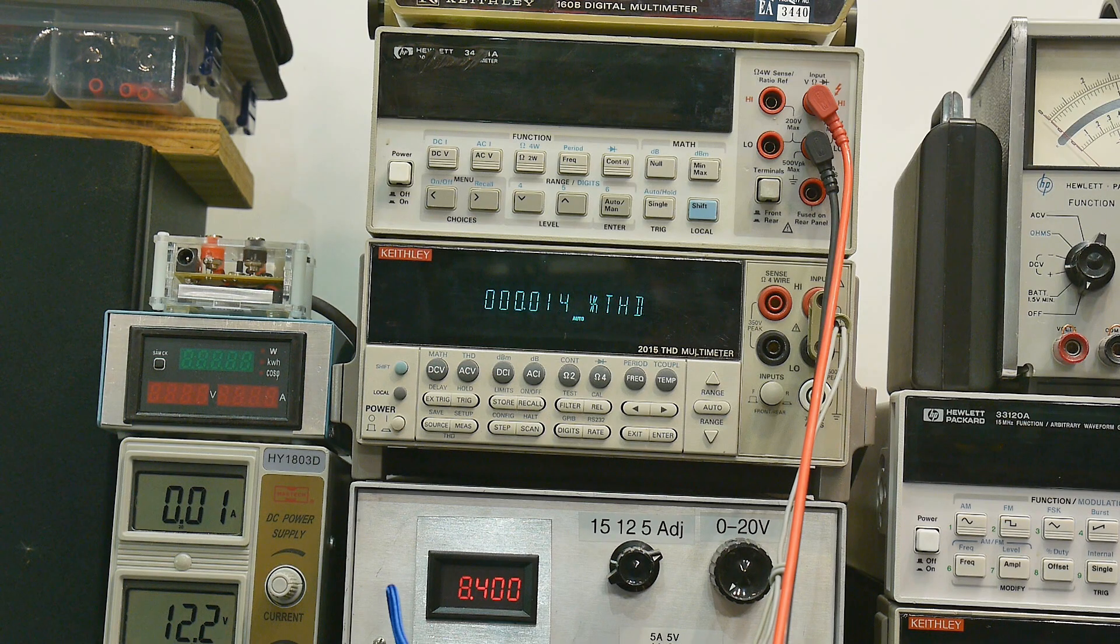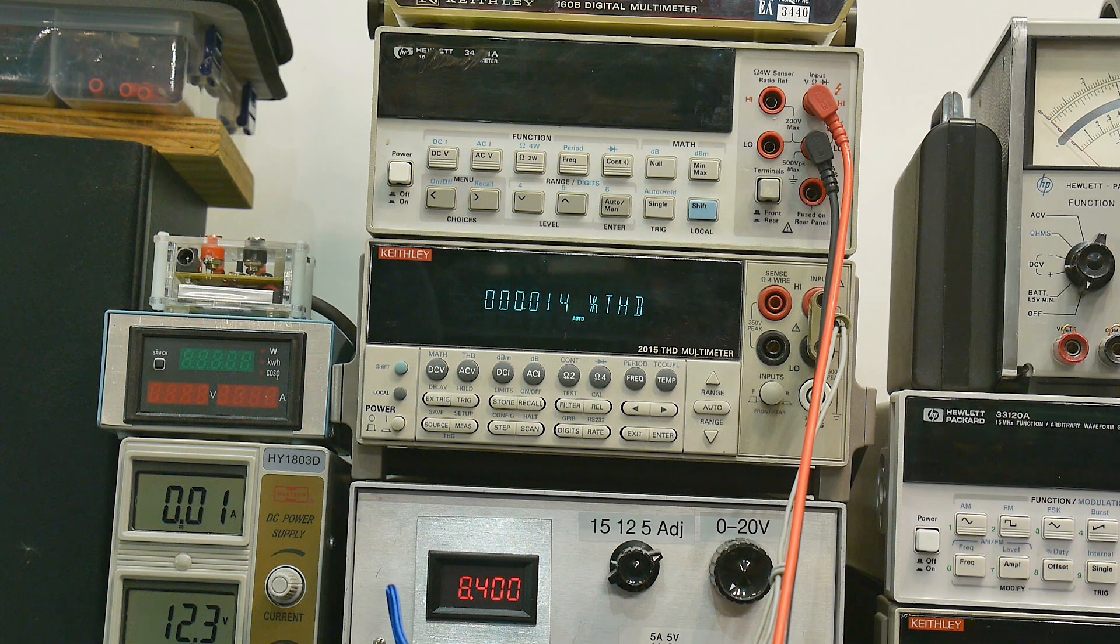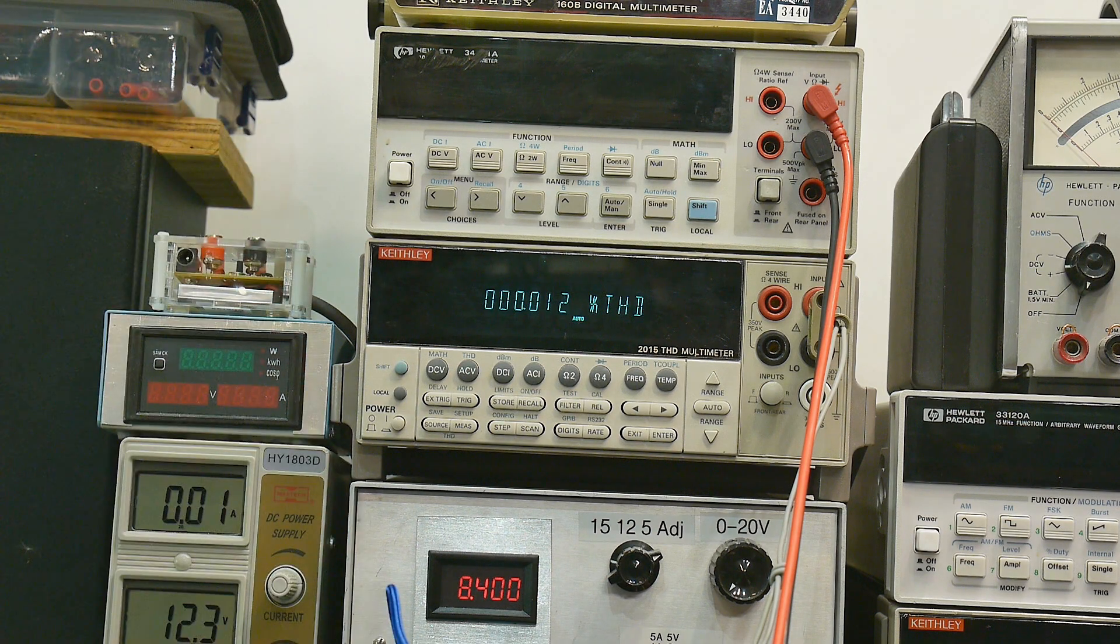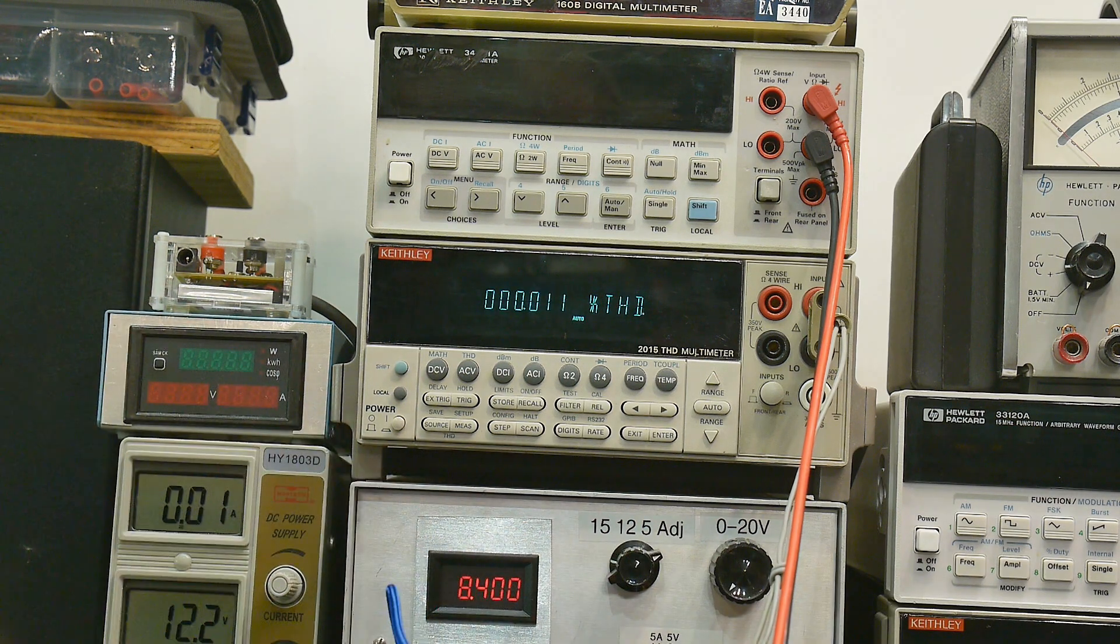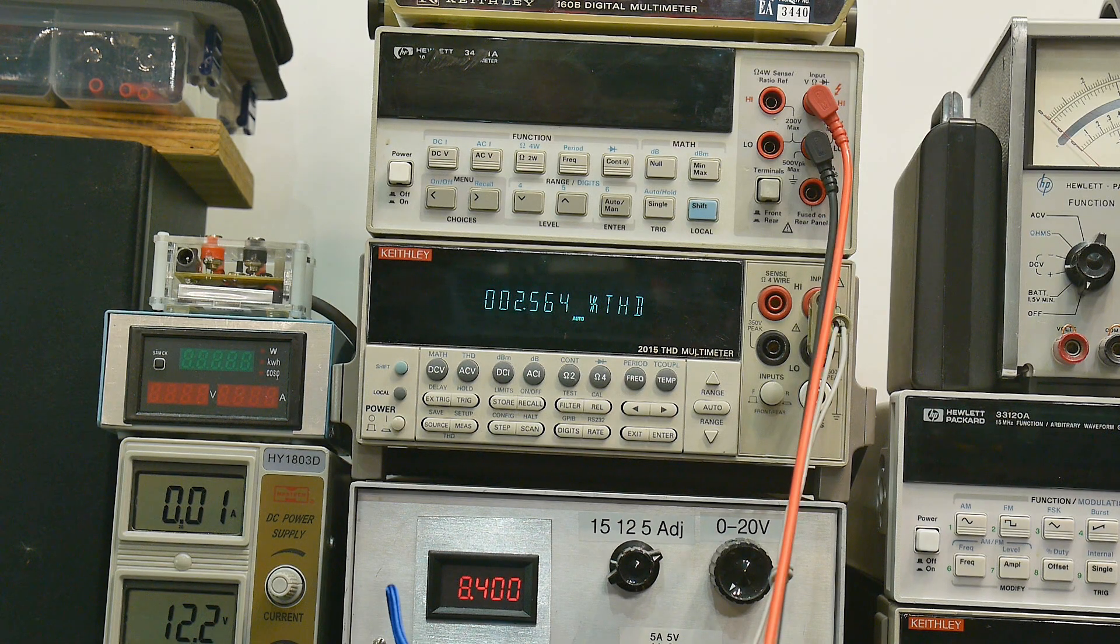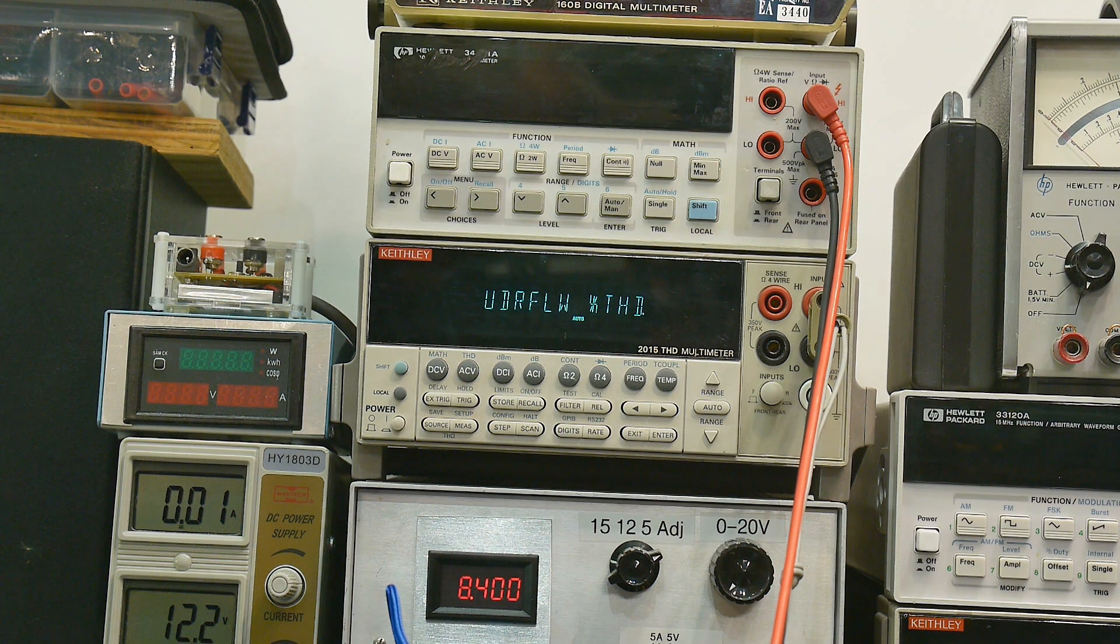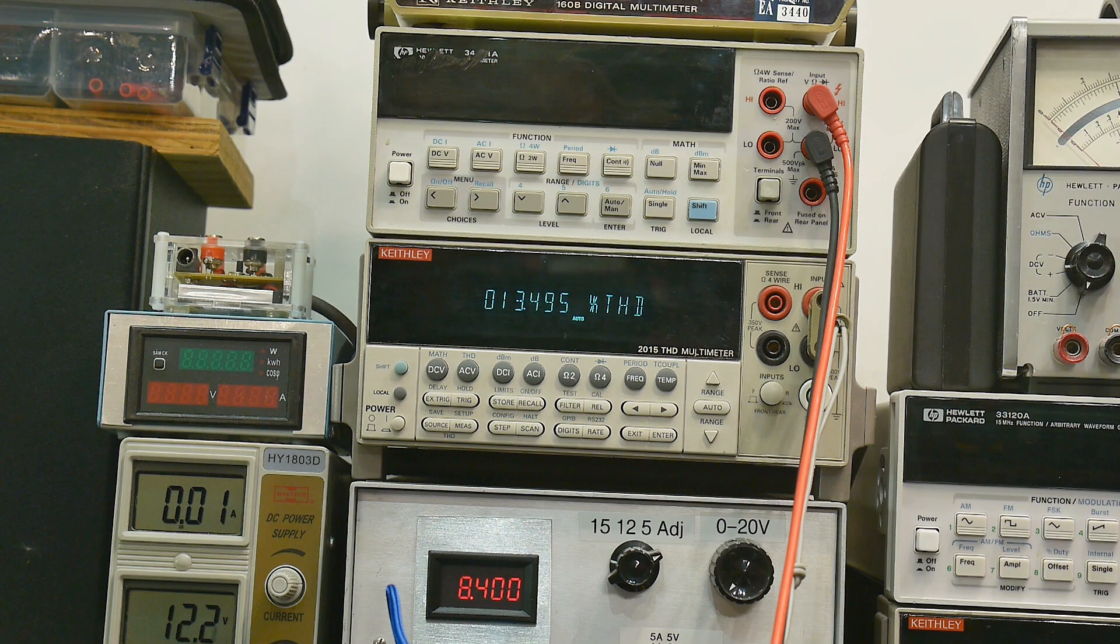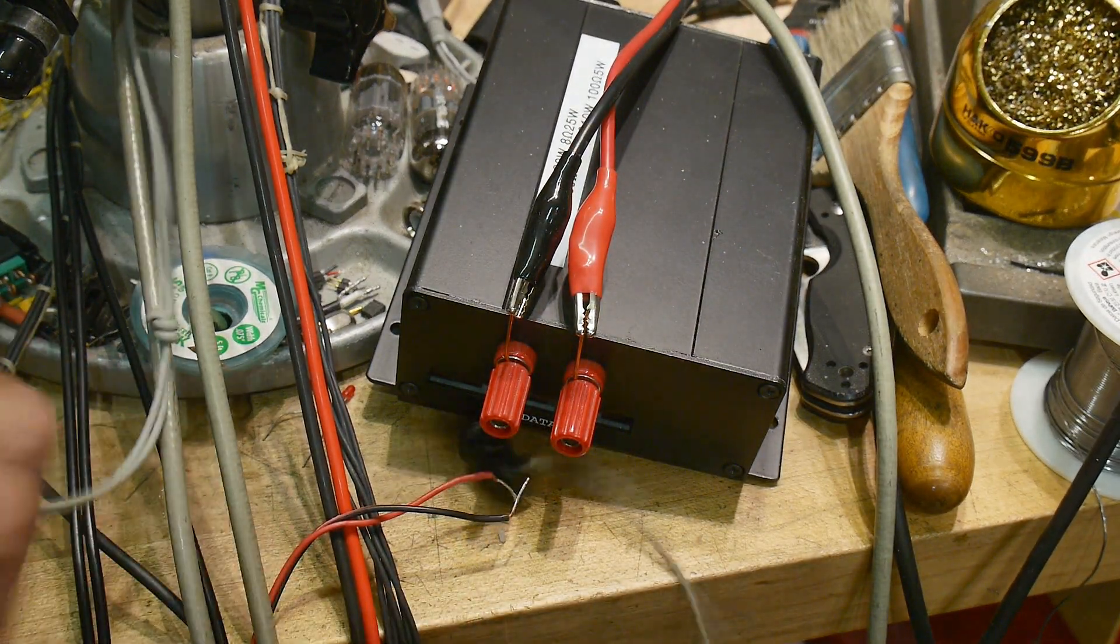People want to probably see it loaded with something like 8 ohms. Let's load it down with 8 ohms and see if the distortion goes up because that's what the amplifier should be running into. Let me show you what I'm doing down here. I've got a load box here with my 8 ohms. Let me hook up the test leads onto the thing.